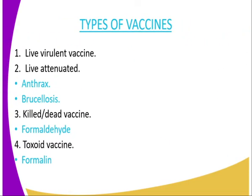There are four types of vaccines. A vaccine is a disease-causing microorganism whose ability to cause disease has been reduced. The first type is live variant vaccine, which is introduced when the disease-causing microorganism or pathogen is live.